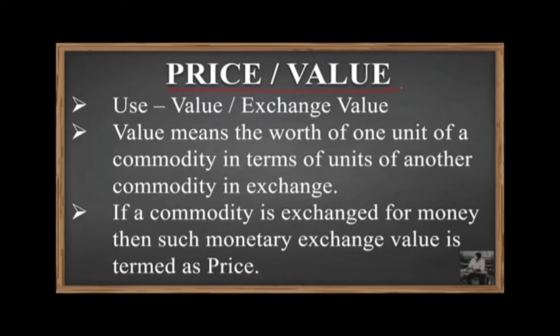In the case of use value, for example sunlight, we are only using that commodity — it is available in abundance, it is an unlimited source. Sunlight, water, and air come under use value. In exchange value, we exchange one commodity with another, for example 1 kg of wheat for 1 kg of rice. So in total there are four topics: price, value, use value, and exchange value.